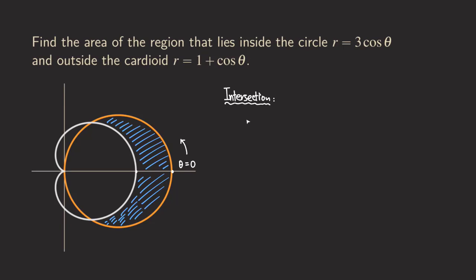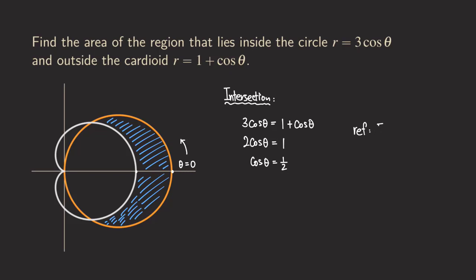To find the intersection, we set 3 cosine theta equal to 1 plus cosine theta and solve. Because there is only the cosine function in the equation, we isolate the cosine function by subtracting cosine theta from both sides. We get 2 cosine theta on the left and 1 on the right. Dividing by two gives cosine theta equals one half.